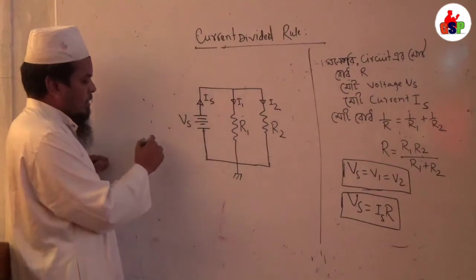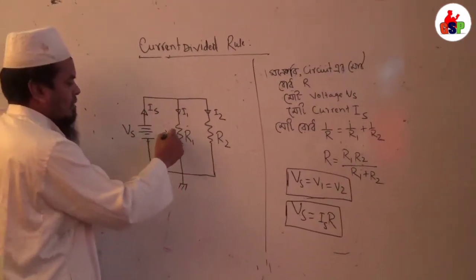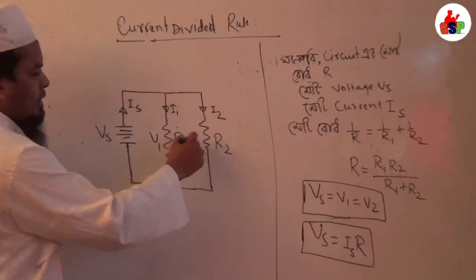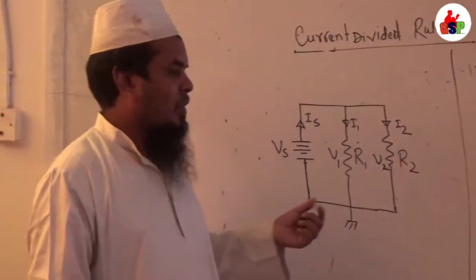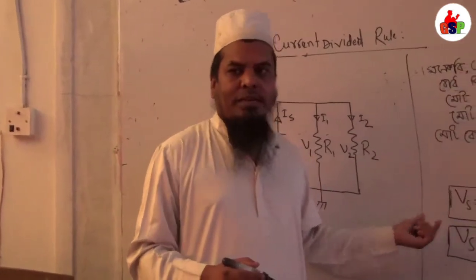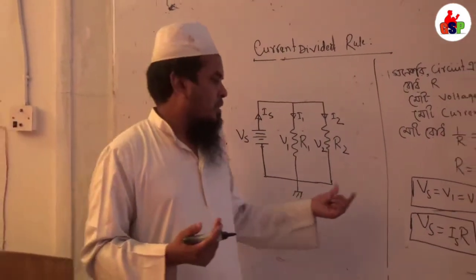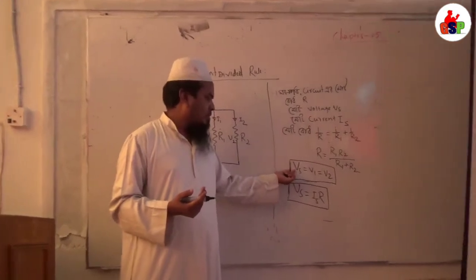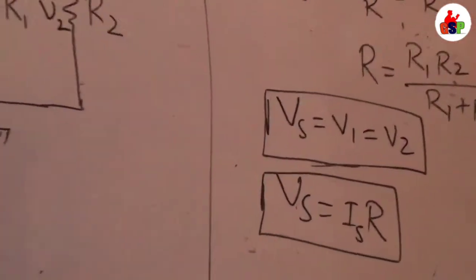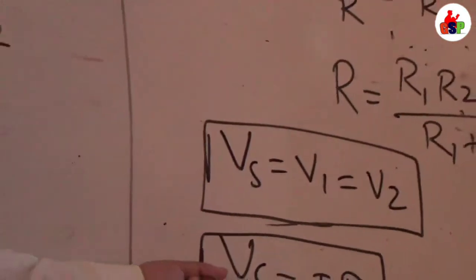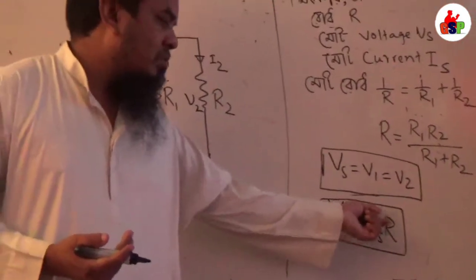This is the current, so that you can see what the current is. The current is V1, V2, this is V1 plus V2. V is equal to mode supply bond, which is equal to mode current into mode resistance.